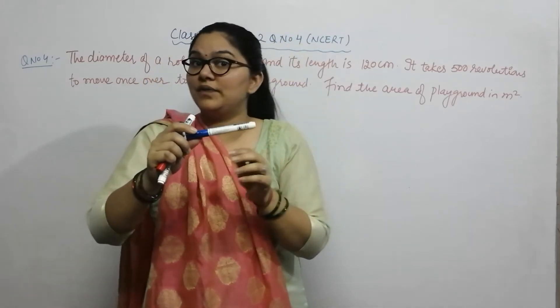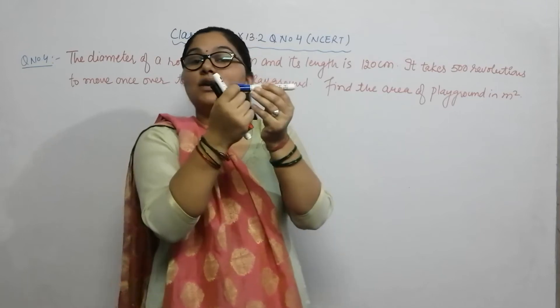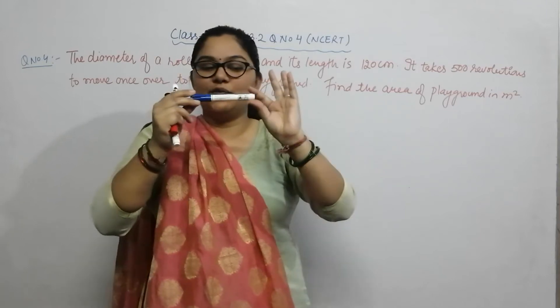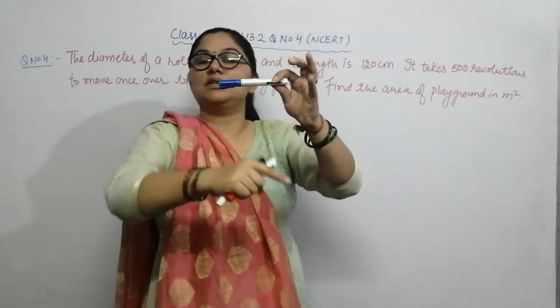This is about curved surface area, not total surface area, because only the curved part is being used as it rolls. Right? So this is the CSA of the cylinder.